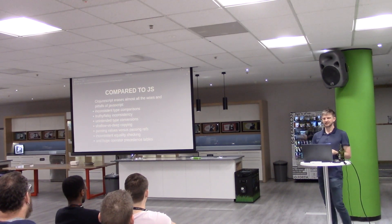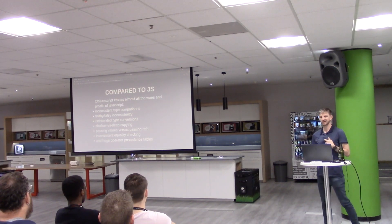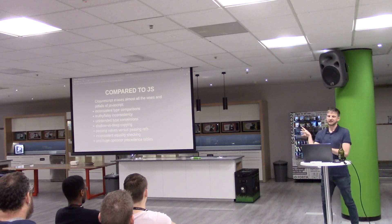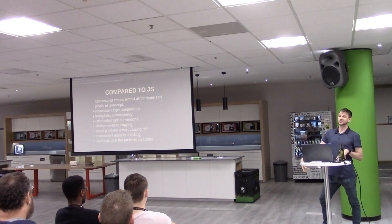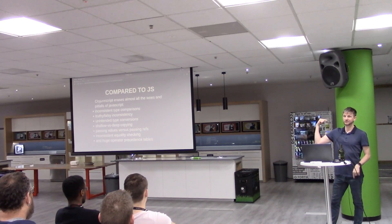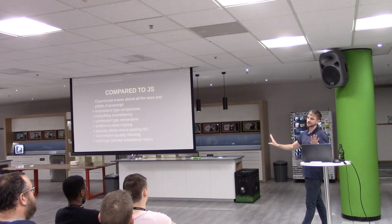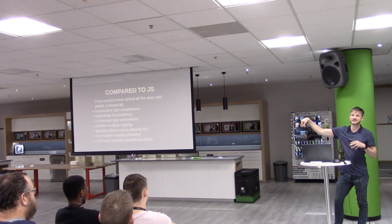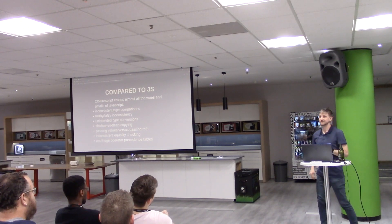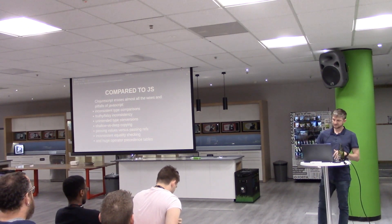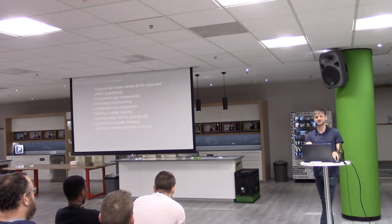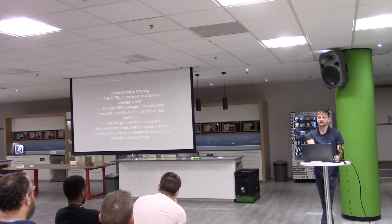Compared to JavaScript, Clojure erases many common woes like inconsistent types, true and false inconsistency, unintended type conversions, and shallow versus deep cloning. In the Redux example earlier, we had to spread our to-dos in order to create a new list so that our front end would know that something had changed. This is not an issue with Clojure because of how it modifies lists and vectors. There are also huge operator precedence tables in JavaScript and inconsistent equality checking.